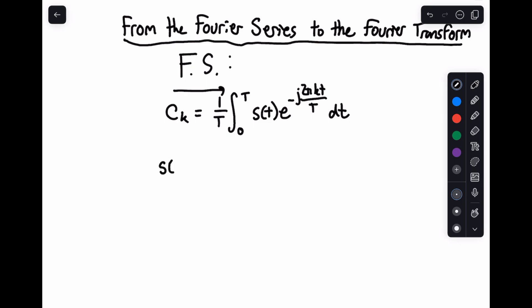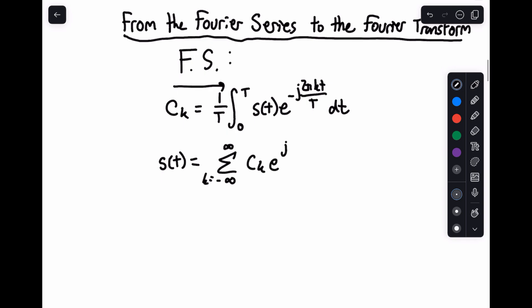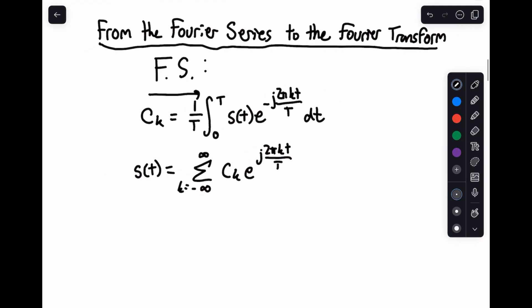And then going back to our time function, s(t) equals the sum from k equals minus infinity to infinity of c sub k e to the plus j 2π kt over T. So in this case, we're bringing T back in and getting rid of k, transforming back. This makes sense, we can go forward and backward.